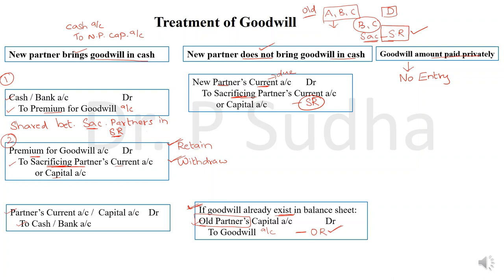So this is a complete overview of the treatment of goodwill. If you understand this, the journal entries are very easy. Now let's see how to work out a problem.